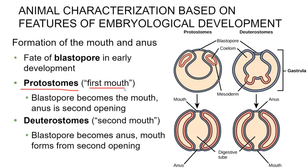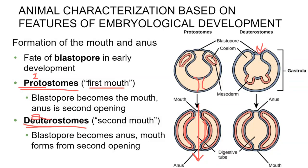Protostomes are mouth first — proto meaning first, like the prototype. This blastopore becomes the mouth opening, and then if the organism develops further, the hole at the other end becomes the anus. So the whole tract covered in endoderm is your digestive tract. Deuterostomes — deutero meaning two, mouth second — means this hole is going to be the anus, and as the mesoderm develops, the hole at the other end becomes the mouth. Interestingly, we are deuterostomes — our anus developed first before our mouth.